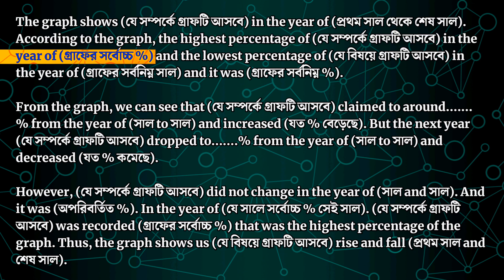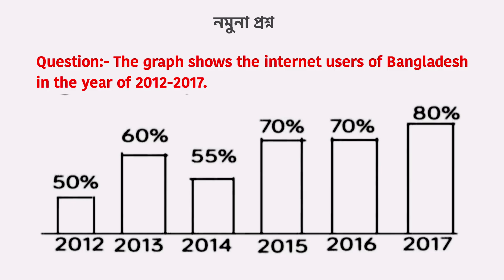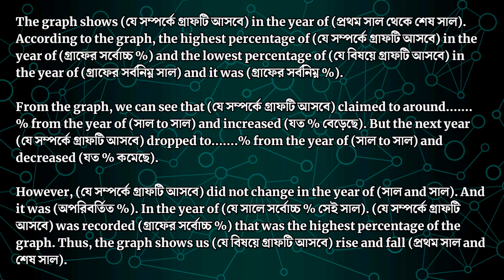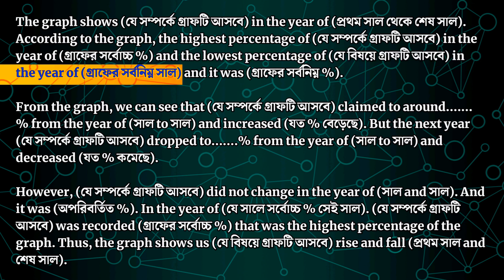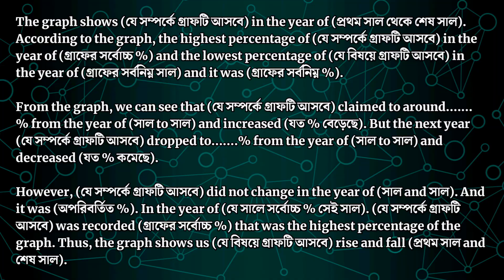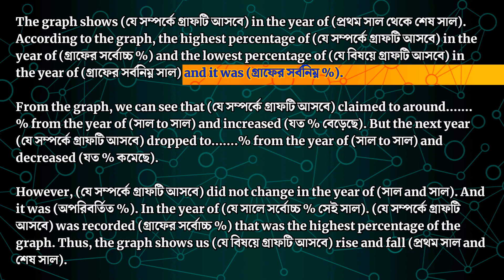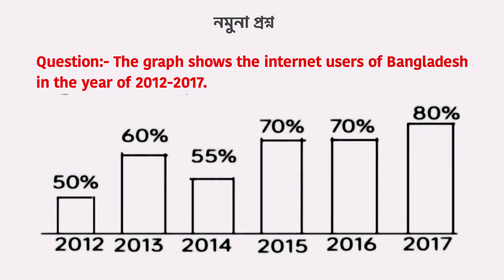The graph shows a percentage of around 80%, which is 21%, and the lower percentage of this graph. The highest percentage is 80% and the lowest percentage is in the year shown, which is around 22% to 25%.